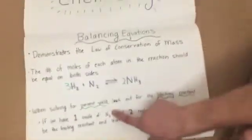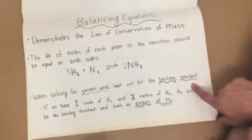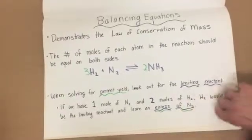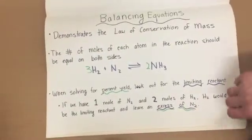When solving for percent yield, look out for the limiting reactant. If we have one mole of nitrogen and two moles of hydrogen, hydrogen would be the limiting reactant and leave an excess of nitrogen.